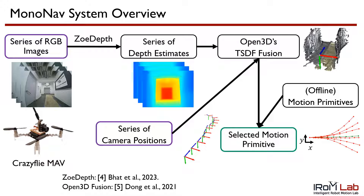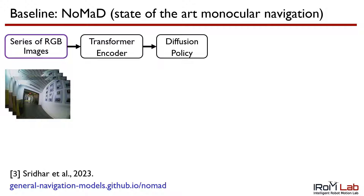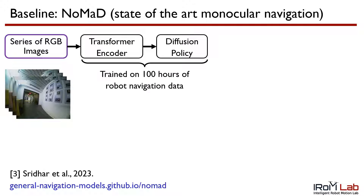If the motion primitive selection problem is infeasible — in other words, no primitive is collision-free — then MonoNav executes a safety maneuver, for example, stop and land. We compare MonoNav to NOMAD, the state-of-the-art in monocular navigation. NOMAD runs a series of monocular frames into a transformer encoder and a diffusion policy trained on 100 hours of robot navigation data.